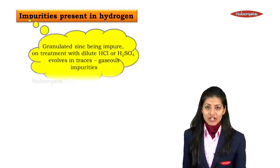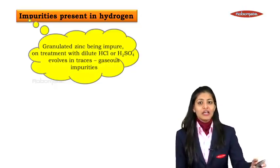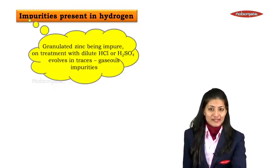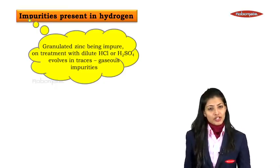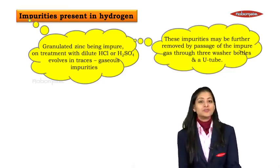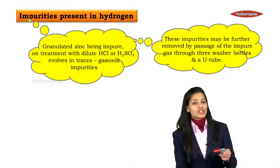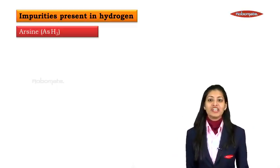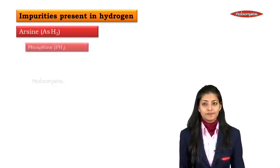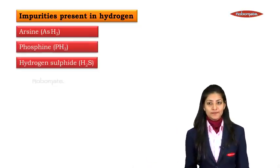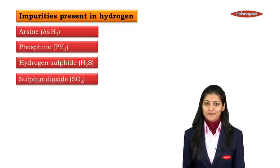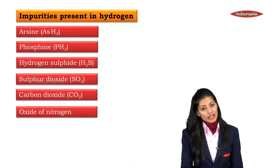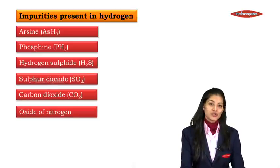Now, impurities present in hydrogen — where do these arise from? Granulated zinc being impure, on treatment with dilute HCl or dilute sulphuric acid, evolves gaseous impurities in traces. These impurities may include arsine (AsH₃), phosphine (PH₃), hydrogen sulphide (H₂S), sulphur dioxide (SO₂), carbon dioxide (CO₂), oxides of nitrogen (NO, NO₂, or N₂O), and water vapour. These impurities can be removed by passage of the impure gas through three washer bottles and a U-tube.